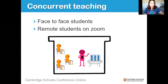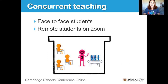Come the summer, we were still on shutdown and trying to figure out how to open schools. Here in the United States, schools are governed by individual states. In Florida, the governor decided we were going back to school but left the option of returning in person to the parents. Teachers were going back, which left us with a hybrid model — students face-to-face and students on Zoom, concurrently and simultaneously.